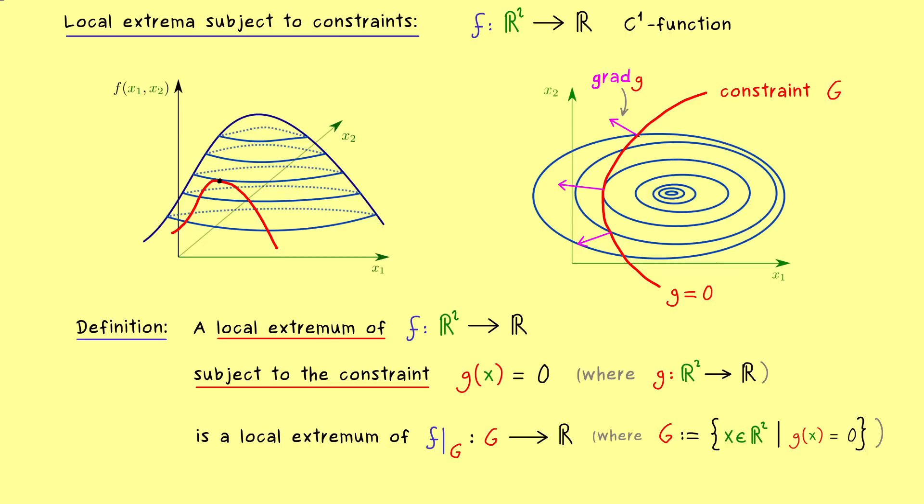On the other hand, we know that the gradient of f is perpendicular to its contour lines. So at each point we can compare both gradients. So for example, at this point here, the gradient of f points downwards, which means we will increase the value of f if we continue here on the line. And this thing is true until we reach this special point here. Because at this point, the gradient of f is also perpendicular to the constraint G.